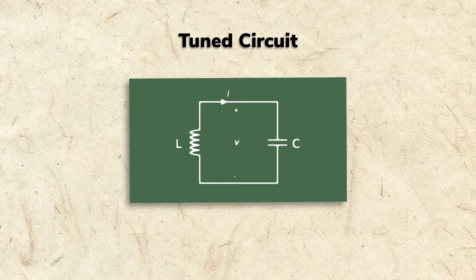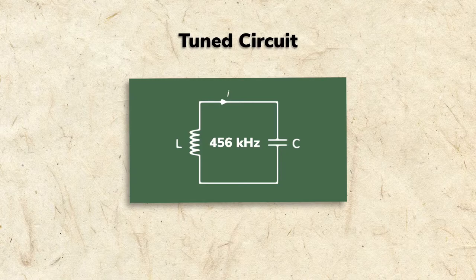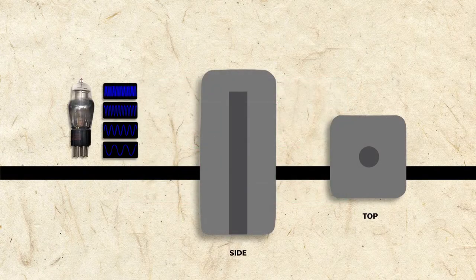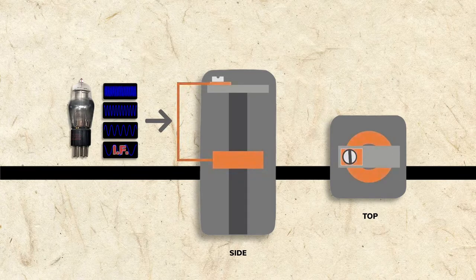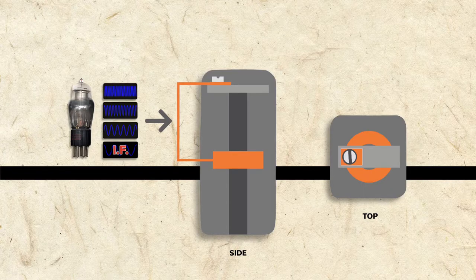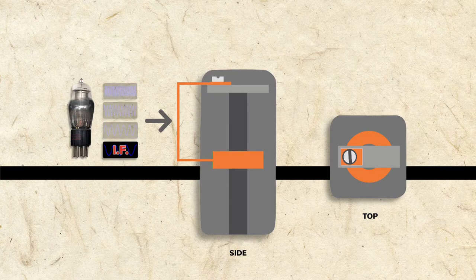The IF transformers in our radio are tuned to resonate with the IF frequency of 456 kHz. The four frequencies from the converter tube are fed to the primary coil and the primary capacitor. The circuit resonates with the IF frequency, and non-resonant frequencies are minimized.